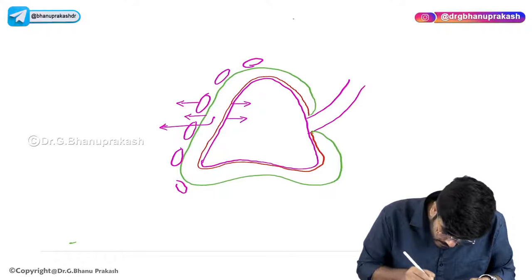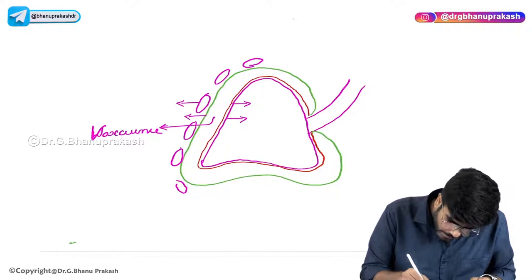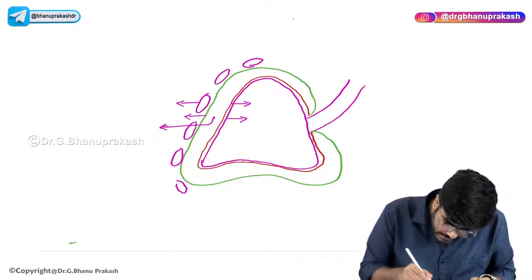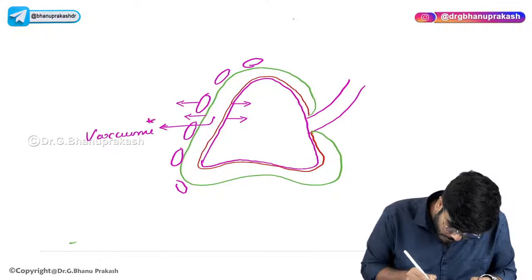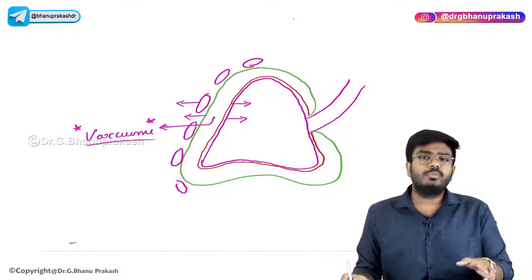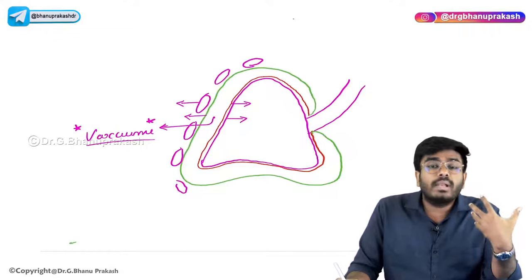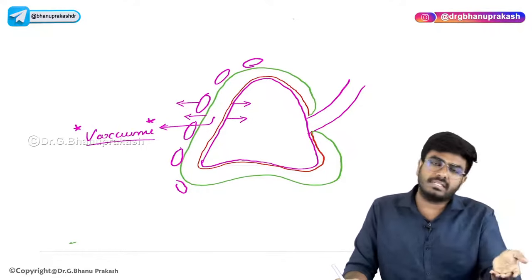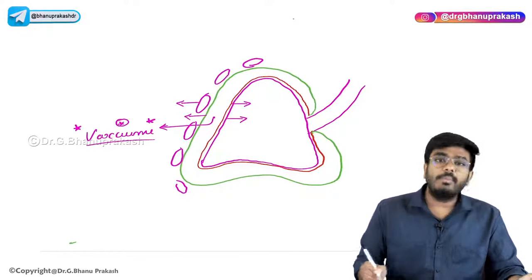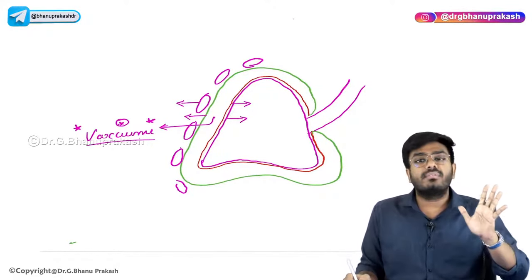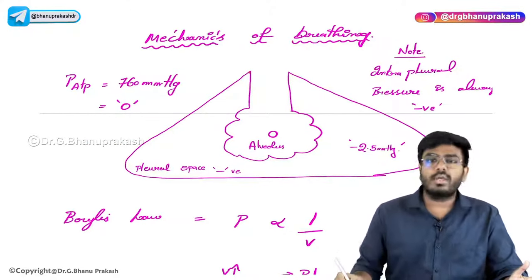Vacuum is a negative pressure. So in the pleural cavity, there is always negative pressure — a vacuum of minus 2.5 mmHg during resting state. Remember for your entire life: in the pleural cavity, there is a vacuum. During resting state, that vacuum pressure is minus 2.5 mmHg.